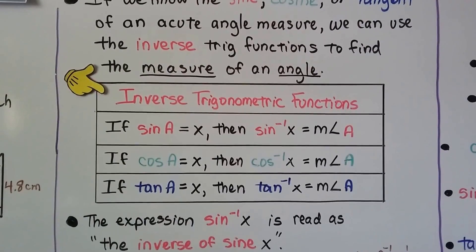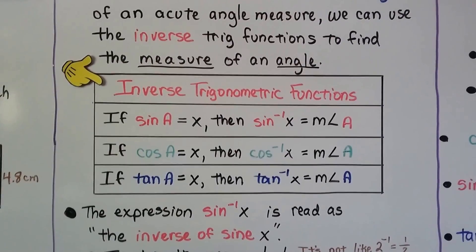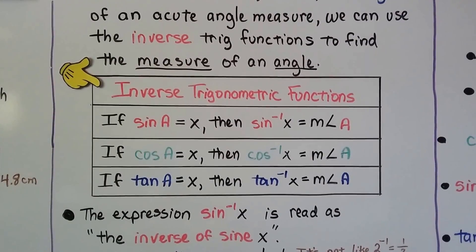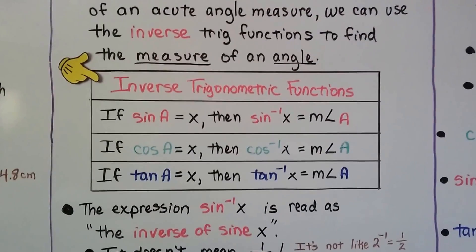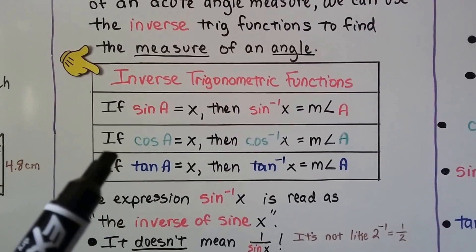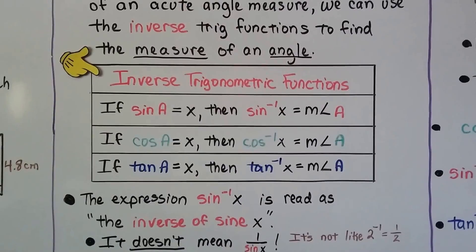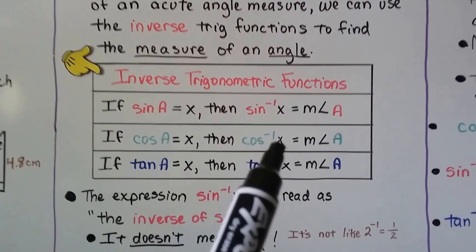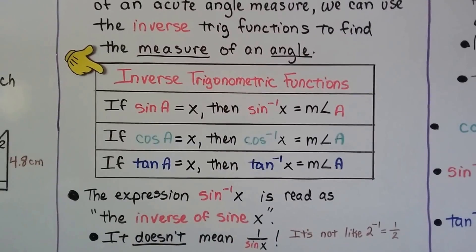If the sine of a equals x, then the inverse sine of x equals the measure of angle a. And if the cosine of a equals x, then the inverse cosine of x equals the measure of angle a.